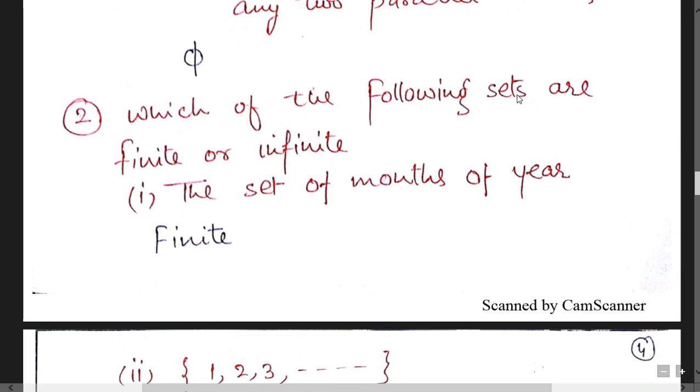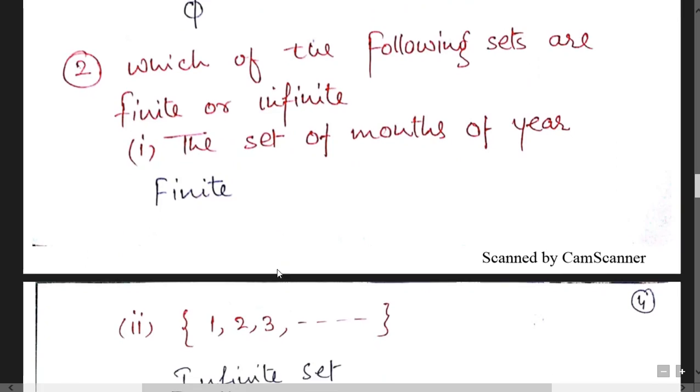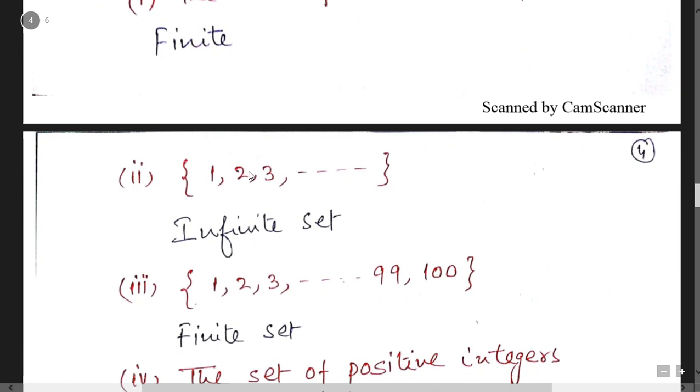In the second question you have to identify finite or infinite sets. Set of months of year, it is finite. You can count 1, 2, 3 up to so on. If dotted lines are there it means you can't count the number of elements of the set. It is infinite.